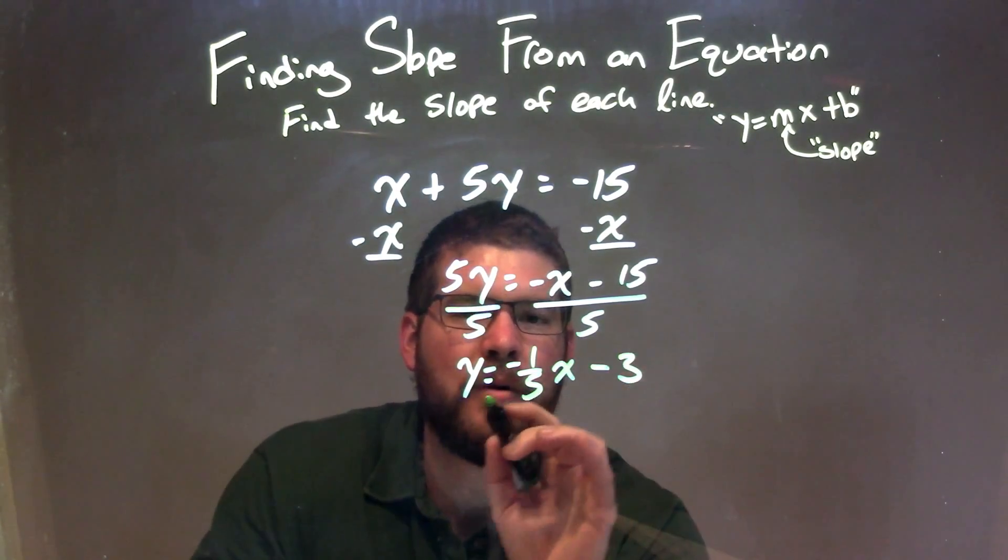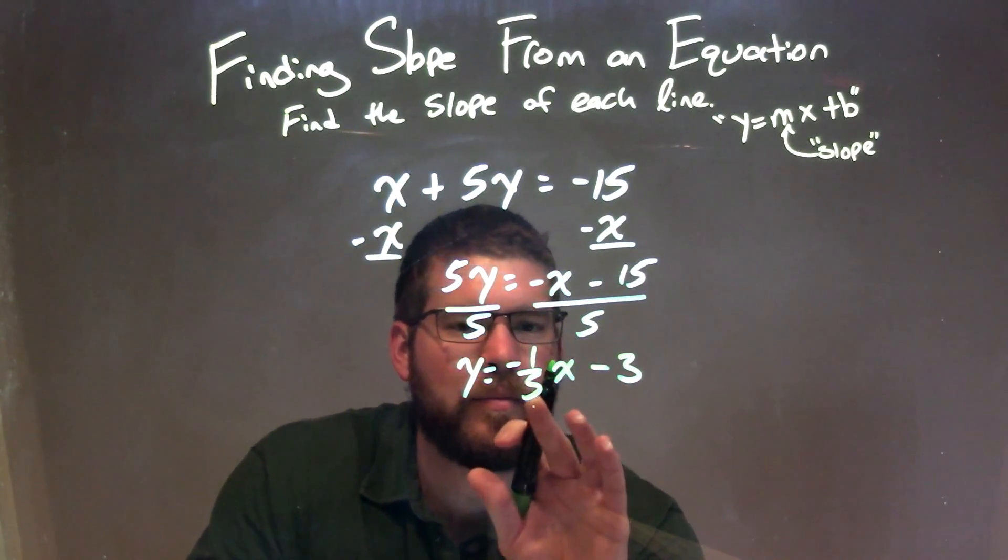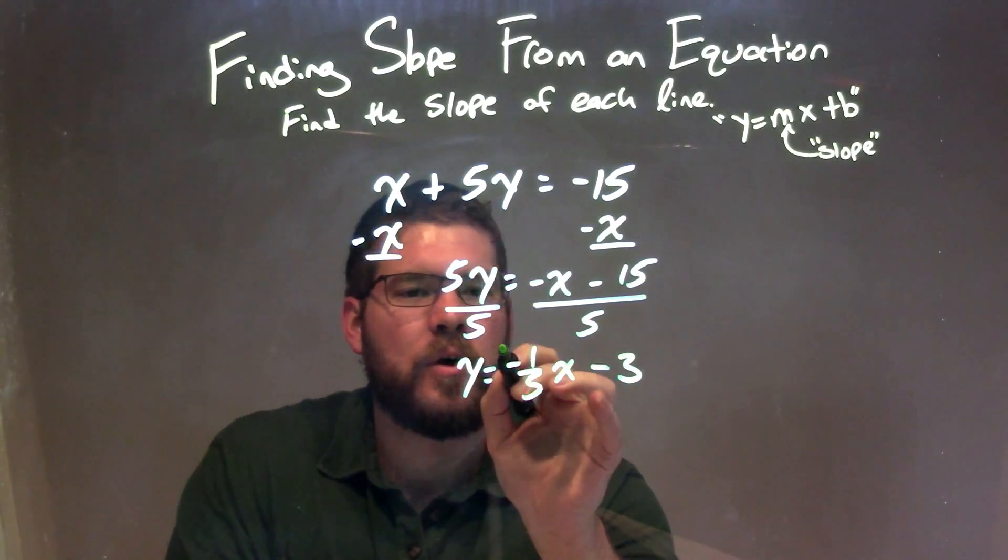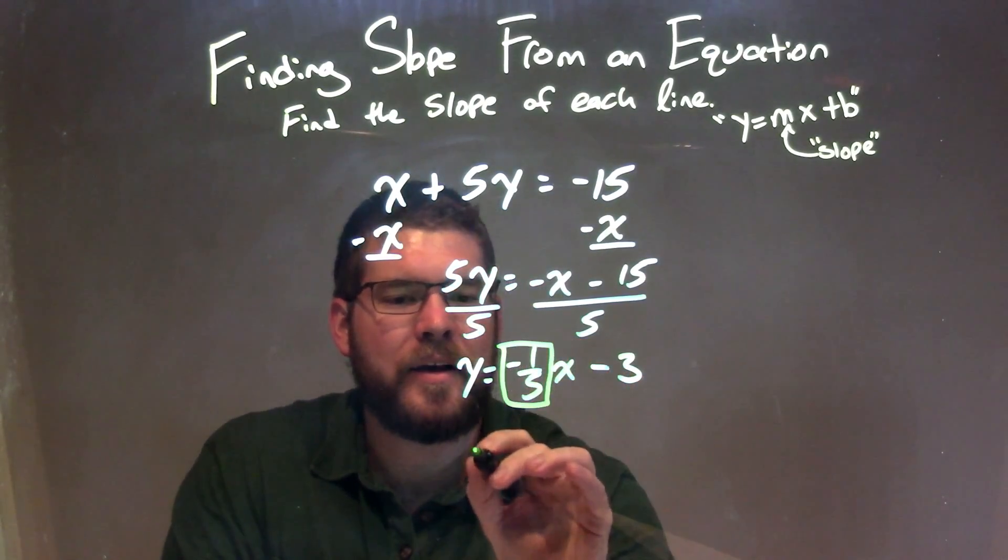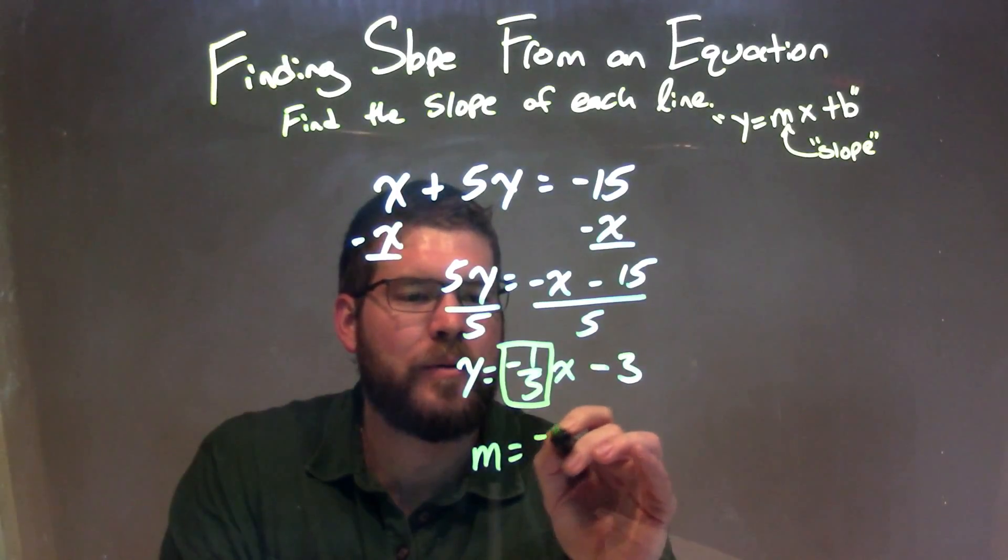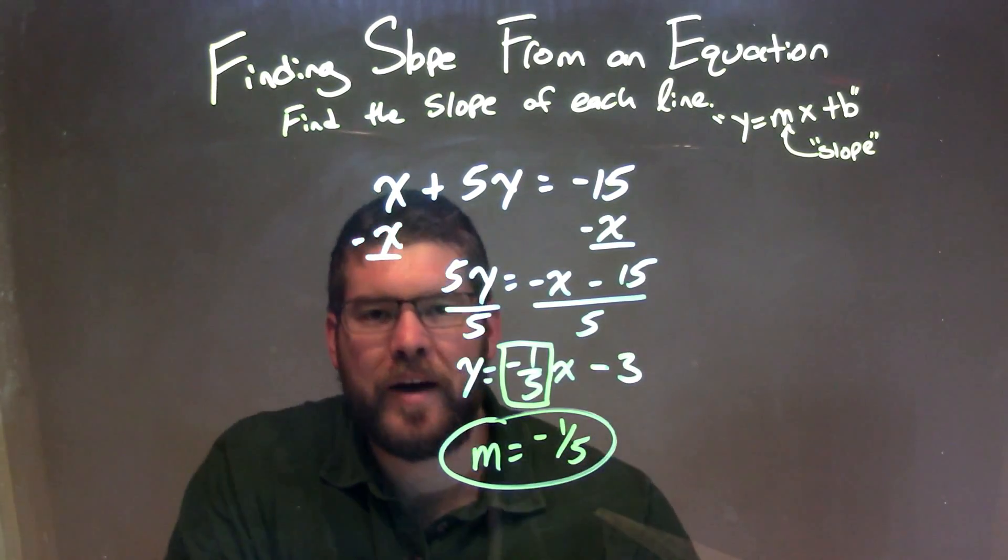That's in our slope intercept form, y equals mx plus b. m is the important part here, which is the coefficient in front of x. So I can isolate that and write it down here: m equals negative 1 fifth, and that is our final answer.